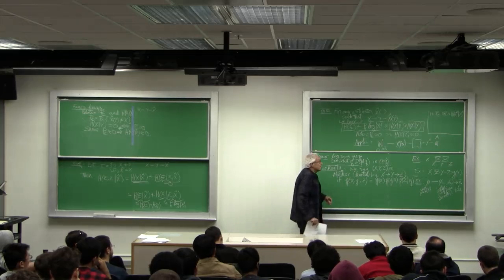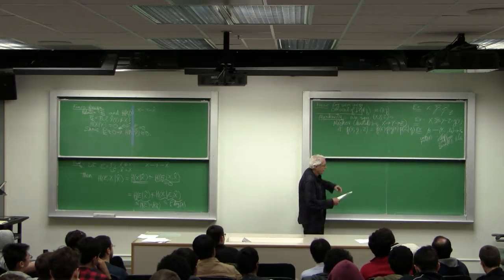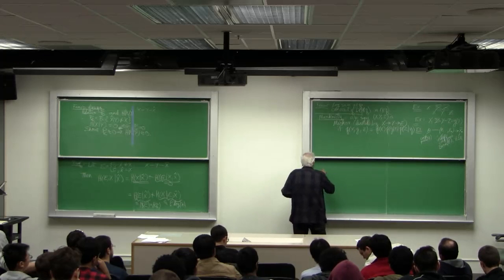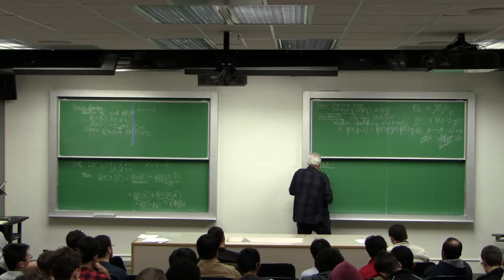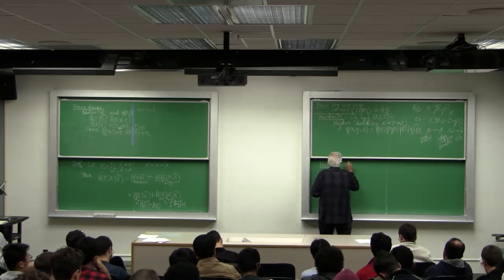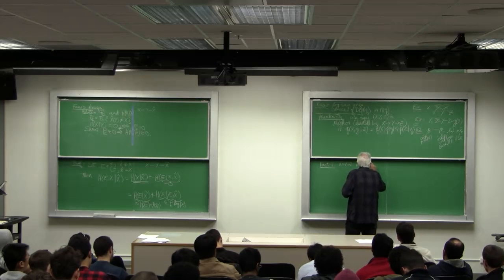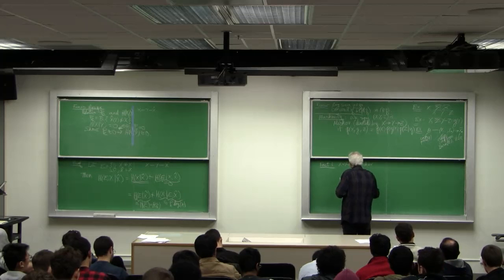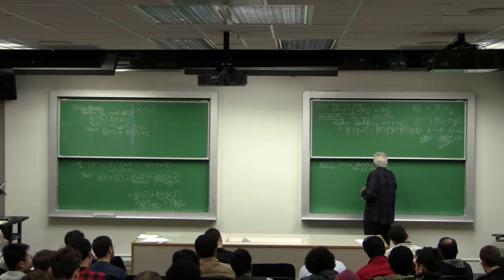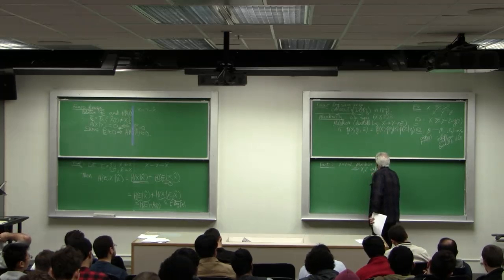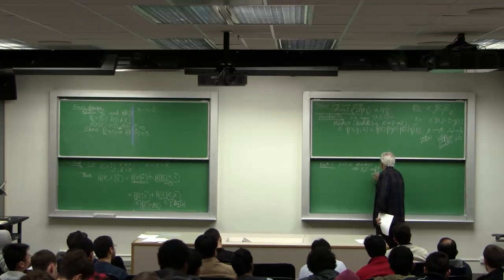Now, there are some other characterizations of Markovity that are equivalent. Here's one. Fact one: X, Y, Z Markov implies X and Z are conditionally independent given Y.